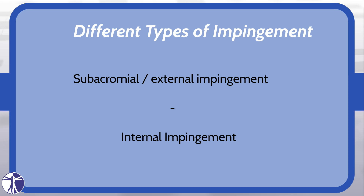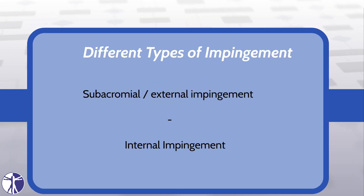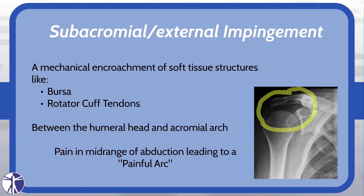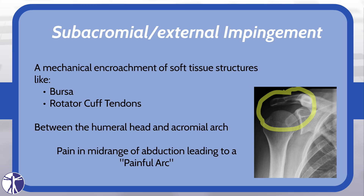The literature describes two types of impingement: subacromial or external impingement, and internal impingement. Subacromial impingement is the mechanical encroachment of soft tissue structures like bursa or rotator cuff tendons in the subacromial space between the humeral head and the acromial arch. Patients often present with pain in the mid-range of motion during active abduction, causing a so-called painful arc.